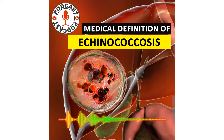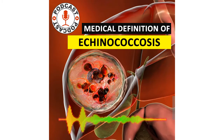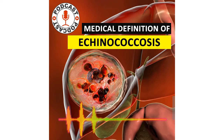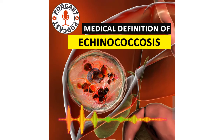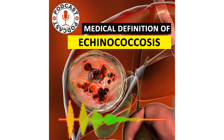Echinococcus is a parasitic disease caused by the larval stage of the tapeworm echinococcus. There are three forms of echinococcus that affect humans: echinococcus granulosus, echinococcus multilocularis, and echinococcus vogeli. Each has a different geographic distribution and tends to cause a different pattern of disease.